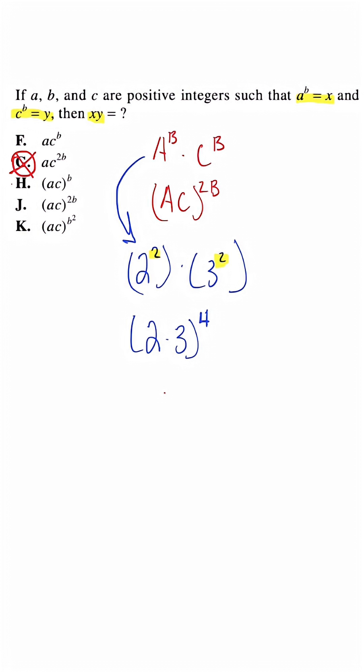When we look at this, this is incorrect because we have different bases. But what we could do, and what the correct answer is, is we'll have 2 times 3, and then we'll take both of those to that exponent power.